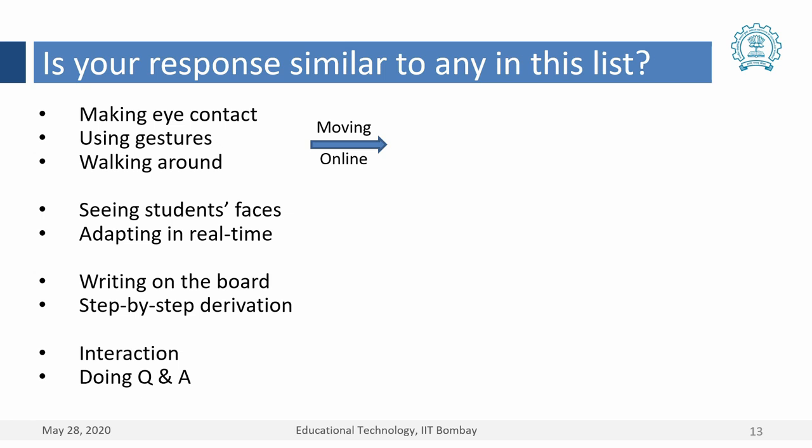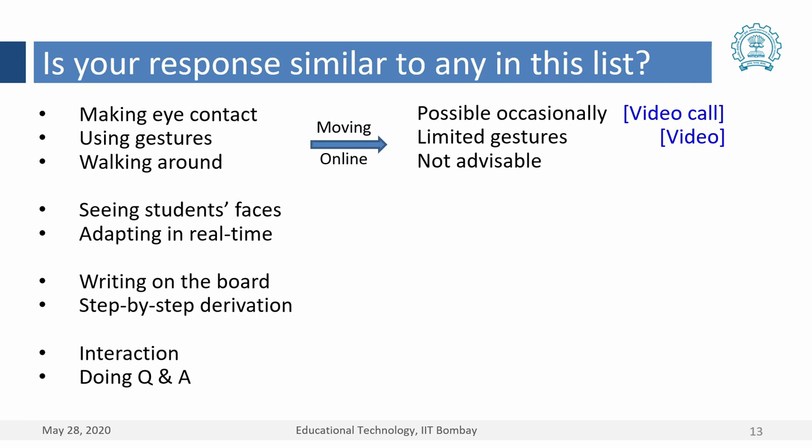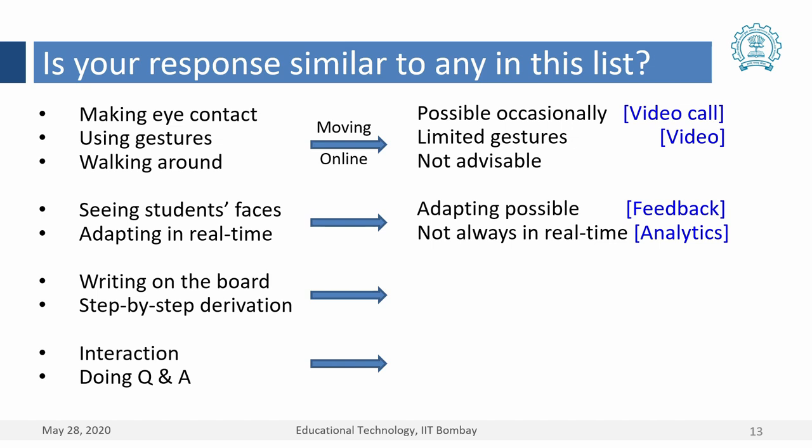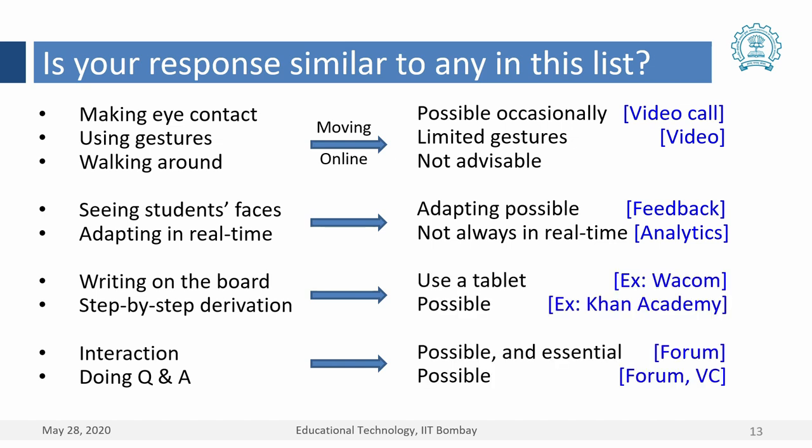Let's see what really happens when we move to online instruction. Making eye contact is actually possible occasionally through a video call. Using gestures is also possible in front of the video. Adapting in real time is possible, though not quite in real time. Writing on the board requires getting used to a tablet instead. Step-by-step derivations are possible — many of us have seen Khan Academy videos. Interaction is not just possible but essential; only the form changes, from face-to-face to forum-based, and there is a lot of power in that.